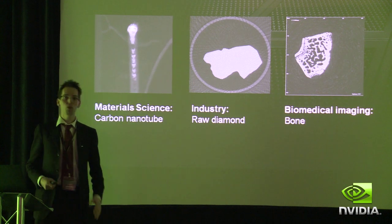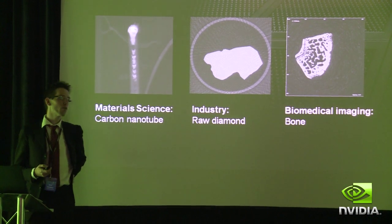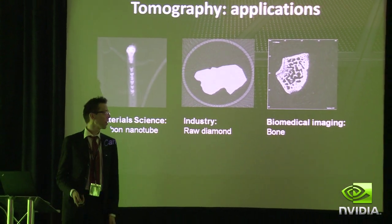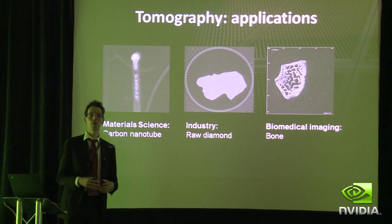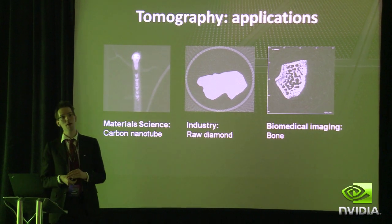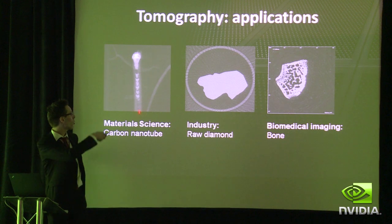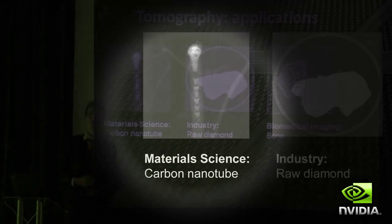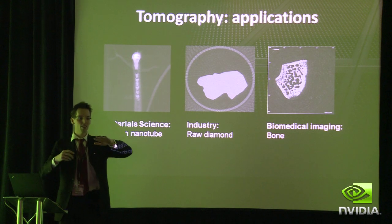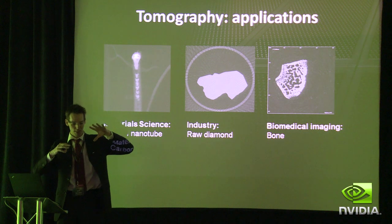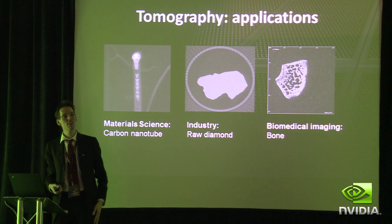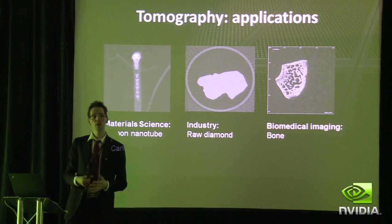It is a highly computationally intensive problem. Tomography has many applications outside of medical imaging as well. For example, we are involved in material science. We have a collaboration with the material science lab who use electron microscopes to record images of nanostructures, such as a carbon nanotube, which you see here. You can imagine that also on a nanoscale you can insert a sample in your microscope and rotate it, like in the CT scanner, and then make a three-dimensional reconstruction out of it.